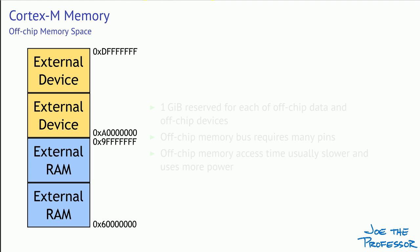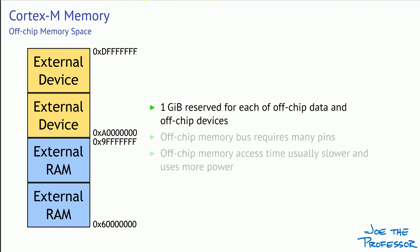The processor architecture specification does have space allocated for off-chip data and off-chip devices or peripherals — one gibibyte each for those two spaces. We don't usually see processors that support external memory because an off-chip memory bus requires lots of pins, making the package very large and expensive, and requiring a lot of power to drive those pins. So off-chip memory is usually not something we'll see in the processors we deal with.